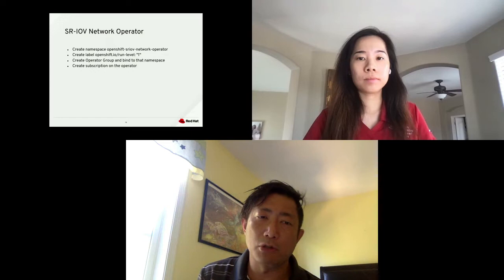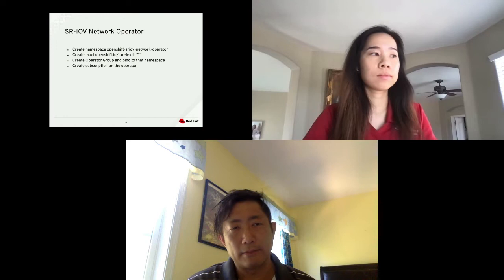This is an example CRD in YAML format. The kind will be a namespace. The label will be OpenShift.io with the level equals one. This will be the first step of creating the namespace. Once you have the YAML file, you do an OC create -f and then the YAML filename, and it will create the namespace for you.